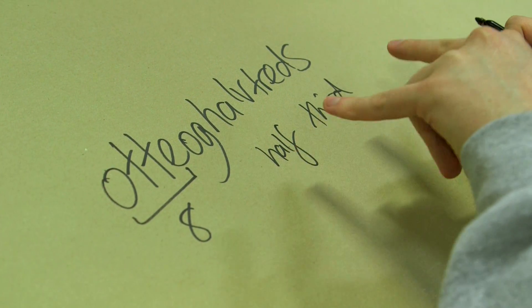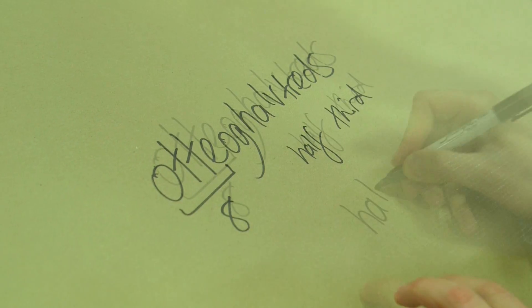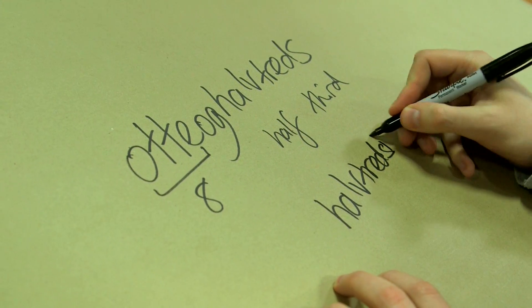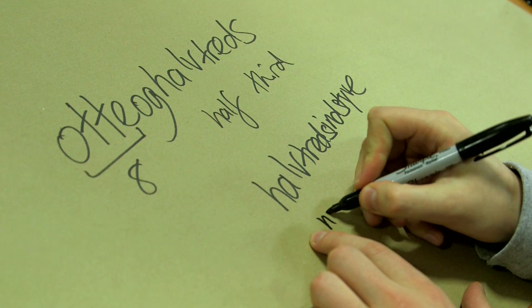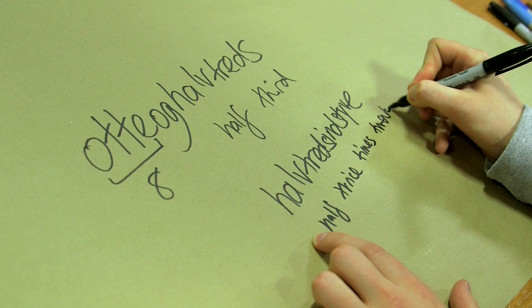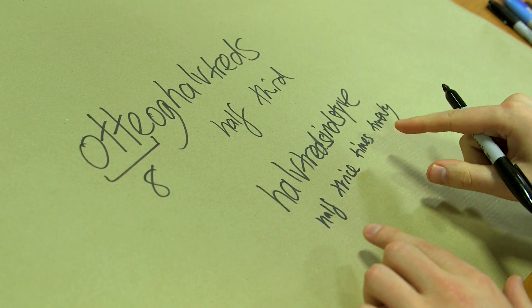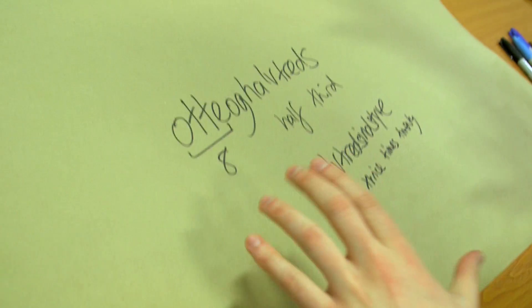So that is an abbreviation. That is halv-tresindstyve. But that is half thrice times 20, which still doesn't make any sense, because how can you manage half times 3 times 20, how does that make 50? Well there you get another catch.